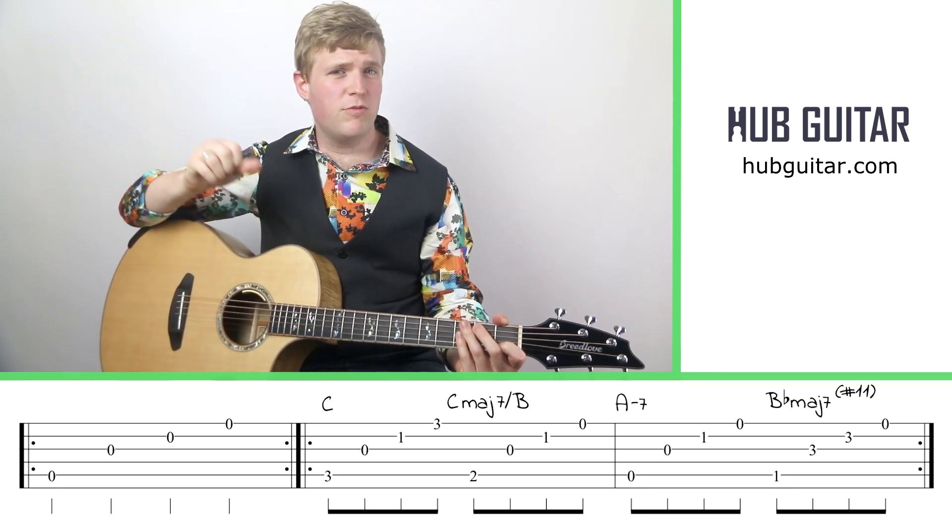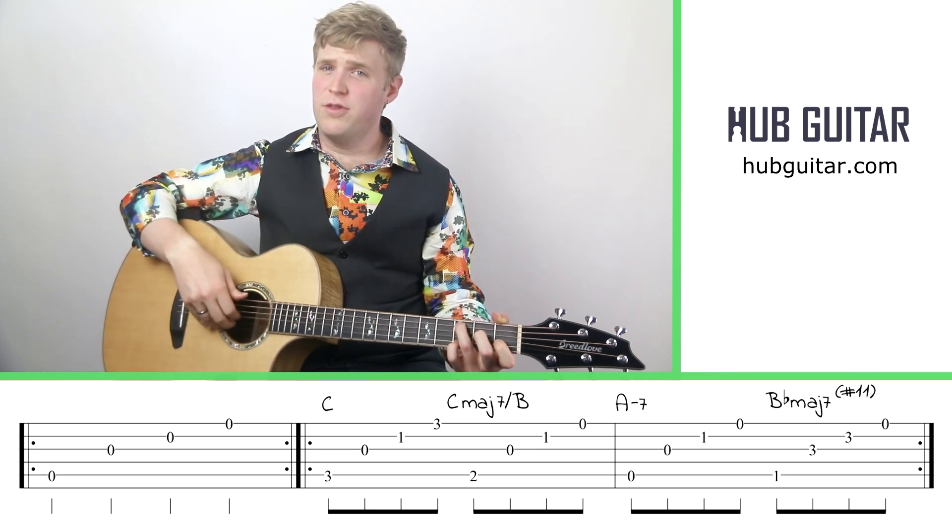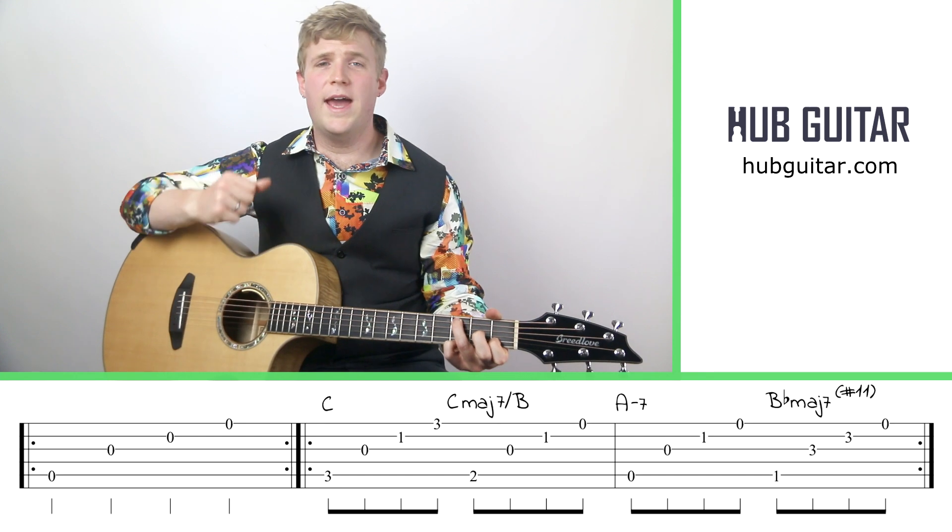Today's pattern is a straightforward roll. It's going to use thumb, index, middle, and ring, and it's going to span across string 5, 3, 2, and 1.